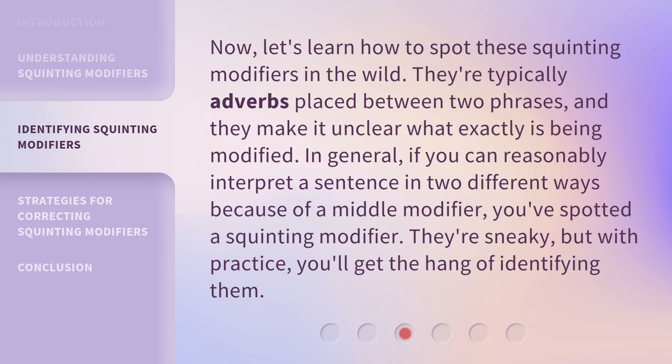Now, let's learn how to spot these squinting modifiers in the wild. They're typically adverbs placed between two phrases, and they make it unclear what exactly is being modified. In general, if you can reasonably interpret a sentence in two different ways because of a middle modifier, you've spotted a squinting modifier. They're sneaky, but with practice, you'll get the hang of identifying them.